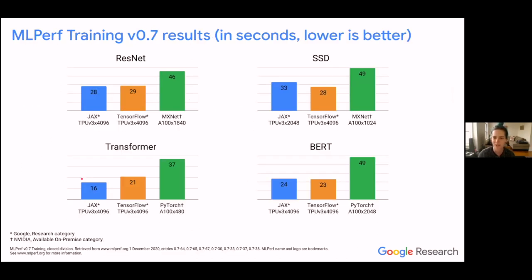To give a little quantitative evidence for JAX and TPUs being a good match, here are some benchmark results from last year — from the MLPerf benchmark, which is an industry standard benchmark competition. It's designed to fairly compare the performance of different ML hardware and software systems, with everyone running the same models on the same datasets to the same accuracy. JAX on TPUs is very competitive; we set a few world records, which was really exciting.